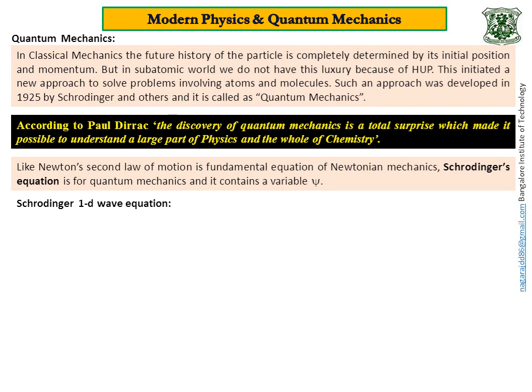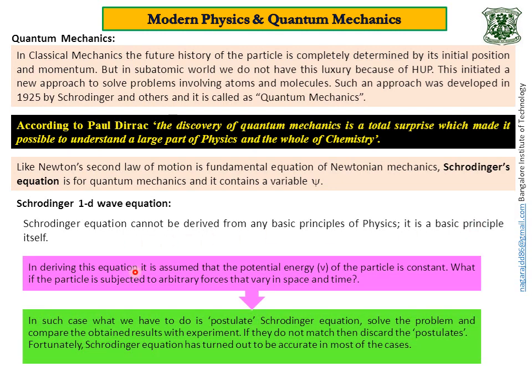Here is a statement by Paul Dirac. According to him, the discovery of quantum mechanics is a total surprise which made it possible to understand a large part of physics and the whole of chemistry. Like Newton's second law of motion is a fundamental equation of Newtonian mechanics, Schrödinger's equation is for quantum mechanics and it contains a variable ψ. First of all, Schrödinger equation cannot be derived from any basic principles of physics. It is a basic principle by itself. In deriving this Schrödinger equation, it is assumed that the potential energy of the particle is constant. What if the particle is subjected to some arbitrary forces that vary in space and time? In such case, what we have to do is postulate the equation, solve the problem and compare the results with experiment. If they don't match, then discard the postulates. Fortunately, Schrödinger equation has turned out to be accurate in most of the cases.